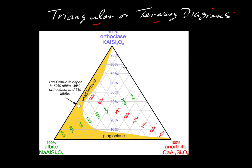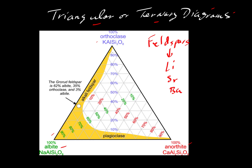We have this very nice diagram from Dexter Perkins' online mineralogy textbook, showing the feldspars generally. The feldspars come in two series: the plagioclase series, which is a mixture of albite and anorthite, and the alkali series, which is a mixture of mostly orthoclase and albite. Feldspars can contain many other components — for example, lithium, strontium, or barium — so potassium, sodium, and calcium are not the only cations beyond aluminum and silicon that can go into a feldspar.